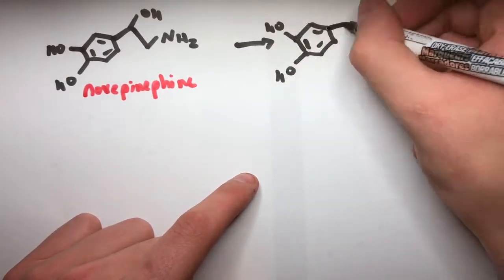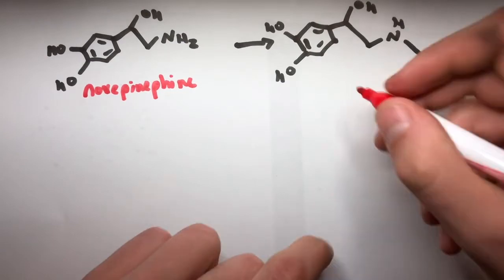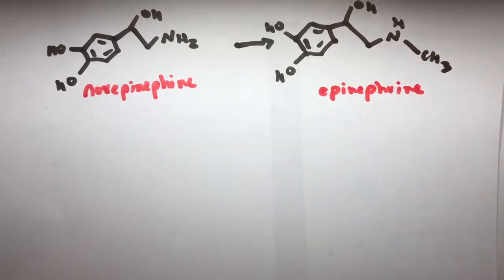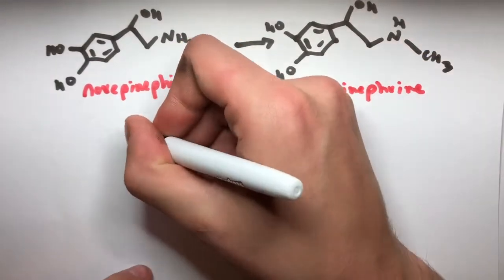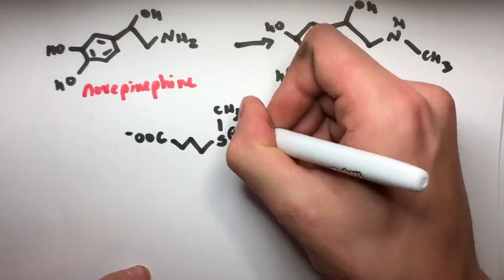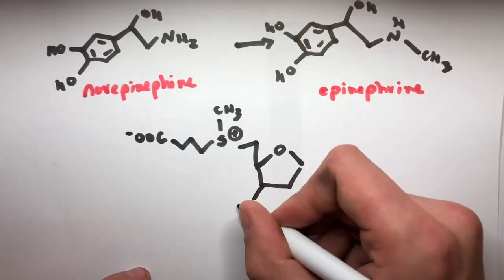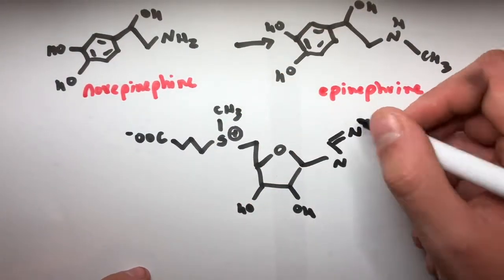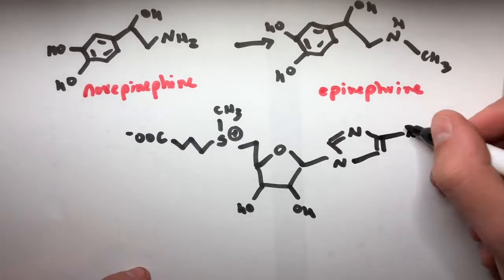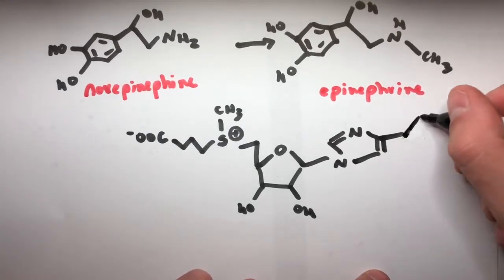The only difference between norepinephrine and epinephrine is the methyl group bound to the nitrogen, so in order to obtain epinephrine, we must methylate the norepinephrine molecule. The mechanism to turn the norepinephrine to epinephrine involves a cofactor of S-adenosylmethionine, which has the following chemical structure.